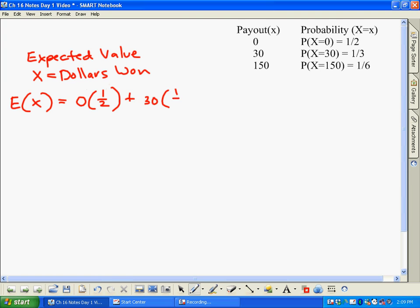And the chance of that happening is 1/3 of the time. Now the next thing that can happen is $150, so we add that on, and we multiply it by its probability. So if you were to grab your calculator right now and take zero times a half, plus 30 times 1/3, and finally plus 150 times 1/6...